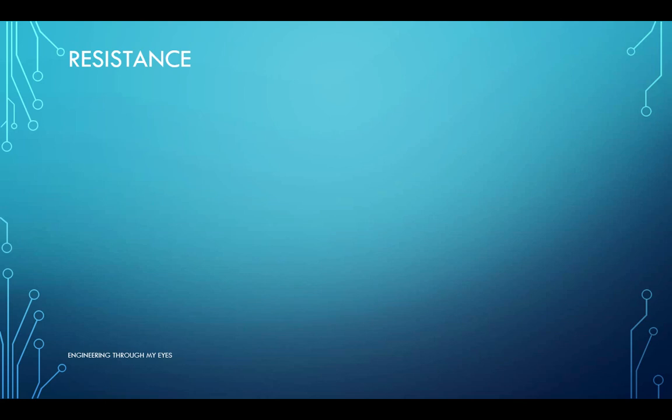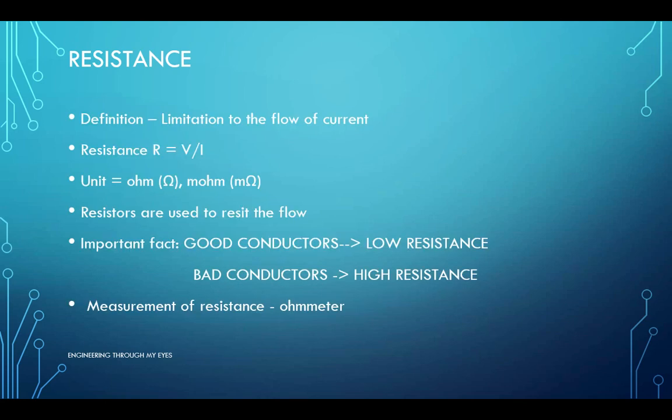Let's go to the next topic, and that is resistance. As the name suggests, resistance is something that resists, stops, or limits the flow of current. Resistance is measured by dividing voltage by current across a given circuit. Its unit is ohms with the sign that I have shown here.